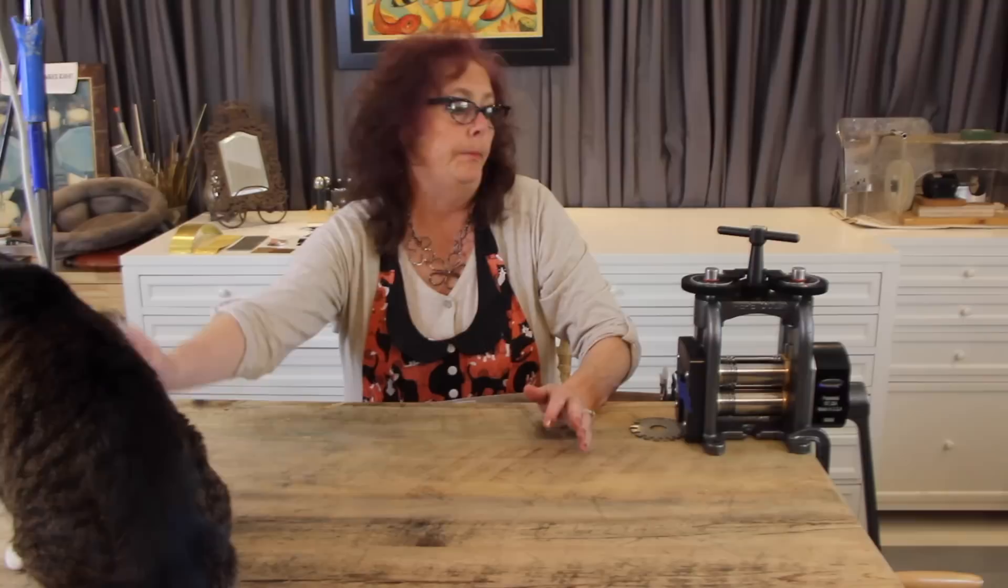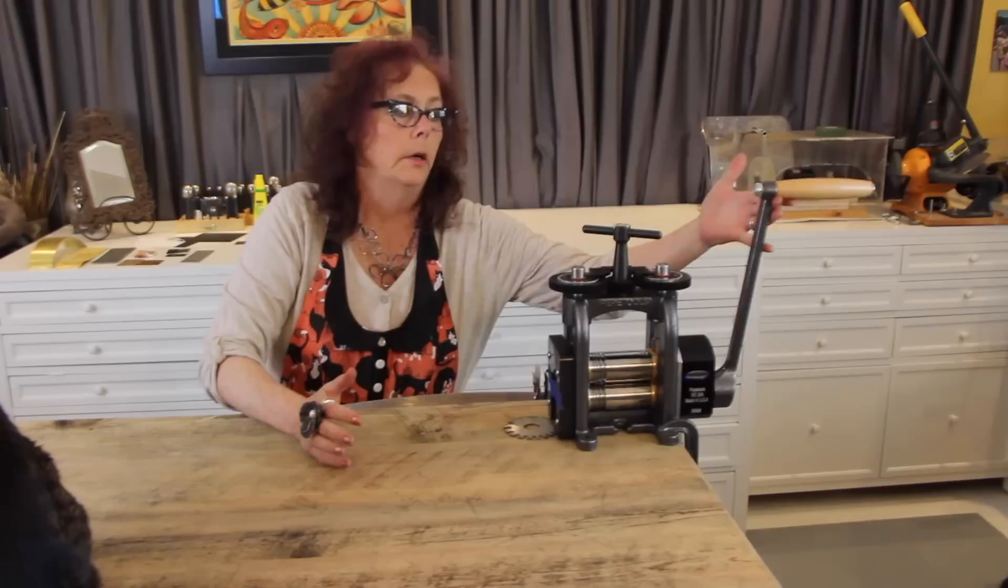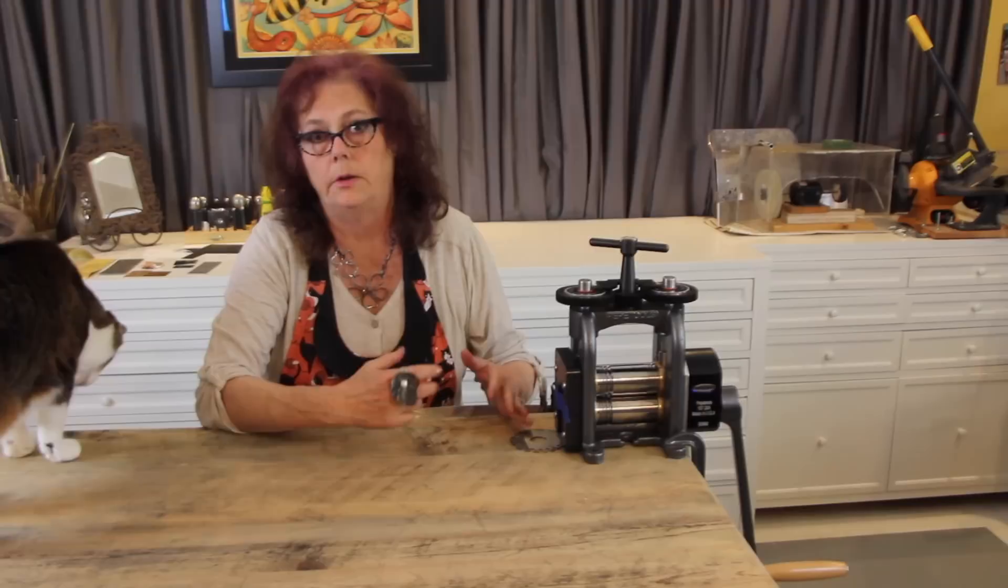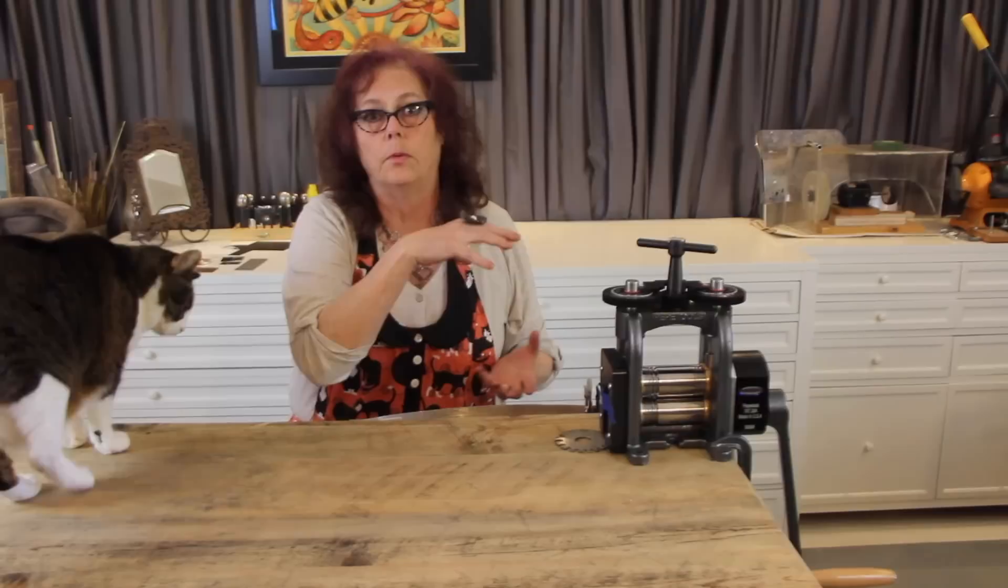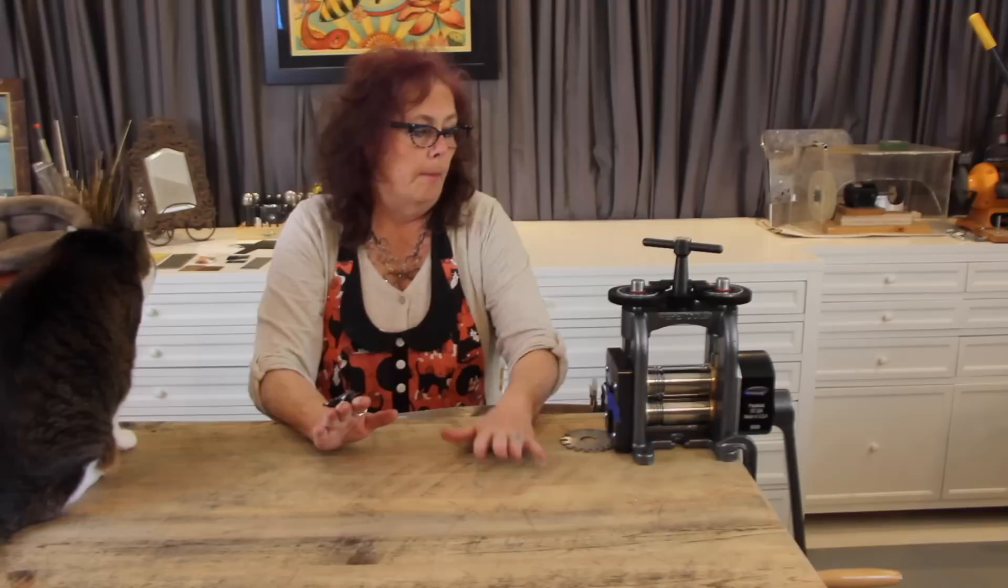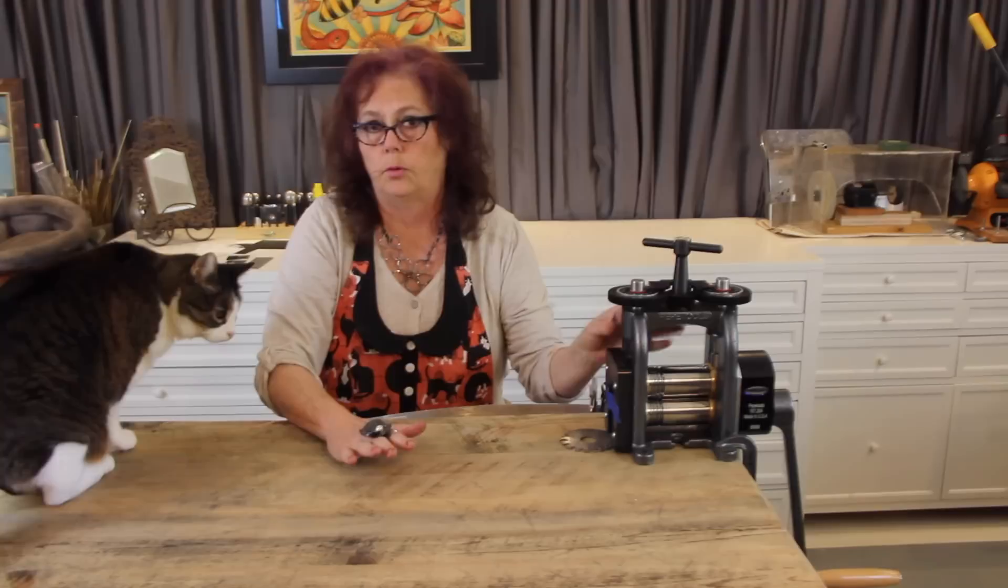So when you go to set this thing up, you want to make sure that you have place for this handle to turn freely. You don't want to stick it in the middle of your workbench because you'll never be able to turn the handle. It's rather long, which gives you a little extra leverage to turn it. You also want to have it on something incredibly sturdy, either mounted to the floor like they have stands for rolling mills that you can bolt to the floor or a big heavy desk like this.